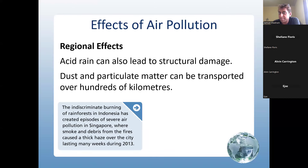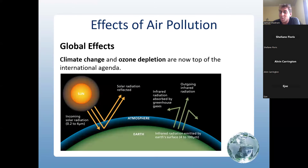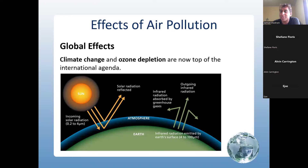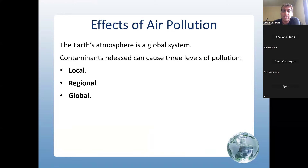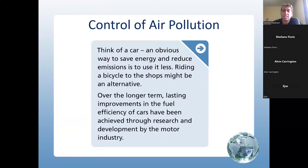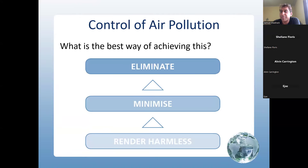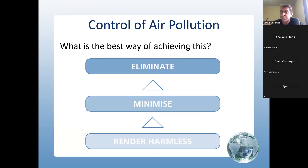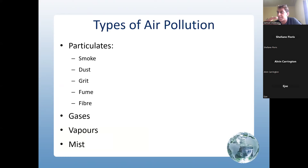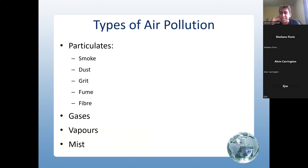Key revision points: CO₂ is responsible for global warming; chloride ion is responsible for ozone depletion. The best way of dealing with air pollution is to eliminate it — that is the best option in the hierarchy.